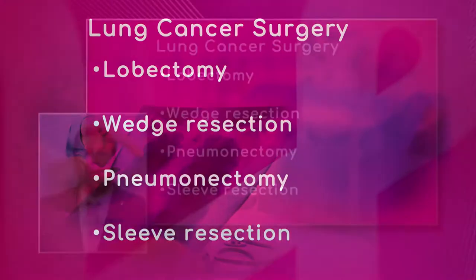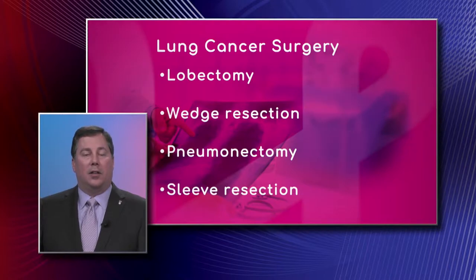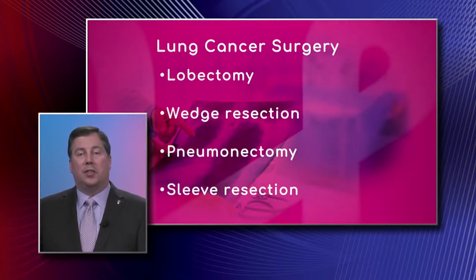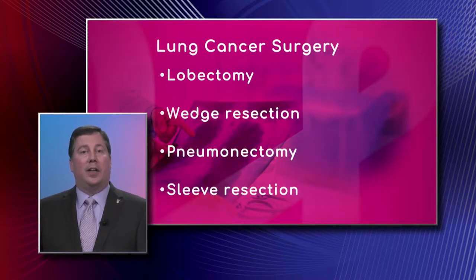Well, the lungs consist of lobes — you have a right lung and a left lung. The right lung has three different lobes; imagine a stalk of broccoli with three florets coming off of it. The left lung has two lobes.